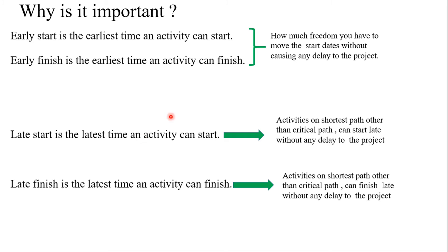Knowing the latest start time also has its benefit. On a network diagram you have paths other than the critical path. Remember that critical activities cannot be delayed, but if you have activities on a shorter path other than the critical path, you can start late without any delay to the project. Similarly, knowing the latest finish time can help you finish late without causing any delay to the project. Activities must be on the non-critical path to enjoy this flexibility.